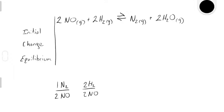So for every two nitrogen monoxides that get used up, two hydrogens will be used up, one nitrogen will be produced, and two waters will be produced.